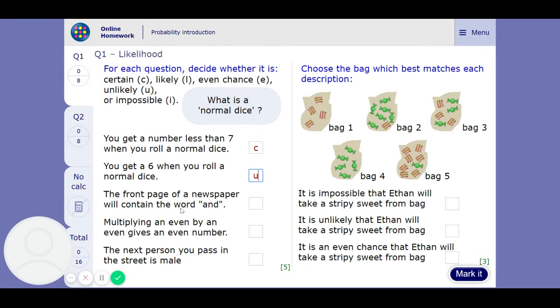The front page of a newspaper will contain the word and. Well, that seems likely to me, because it doesn't have to, it's not certain, but it's a very common word, so it's going to be better than an even chance. Multiplying an even and an even makes an even number, so let's test this. 2 times 2, 4. 4 times 6, 24. Yes, any one you do will give you an even number, so it is certain.